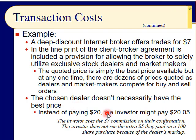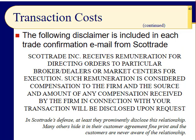So instead of paying $20, which was the best price at the time, you pay $20.05 — a nickel more. The investor sees the $7 commission on their confirmation, but does not see the extra $5 paid on a 100-share purchase because of the dealer's markup. That's five cents times 100 shares — an extra five bucks that doesn't show up on the ticket or the email confirmation.